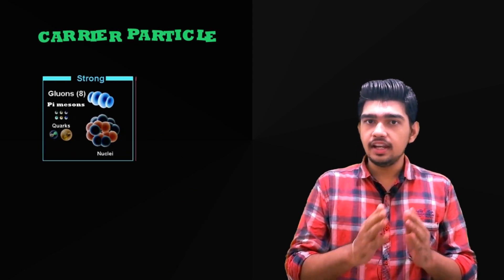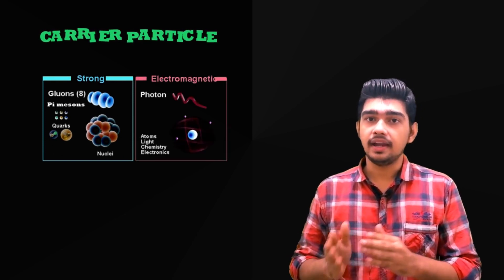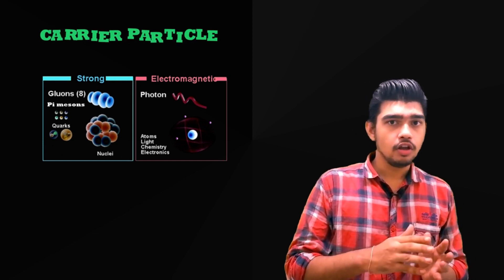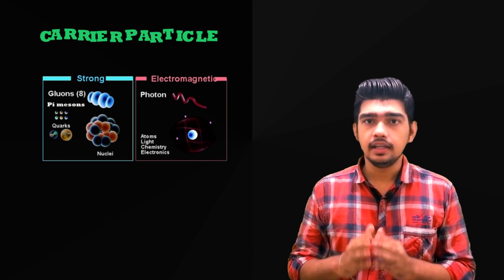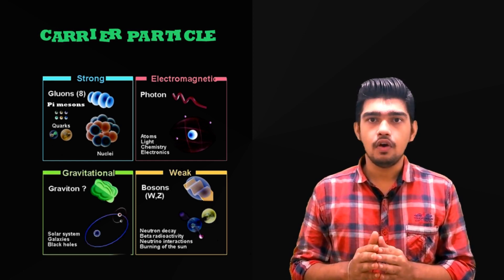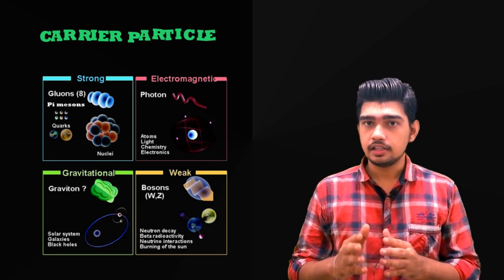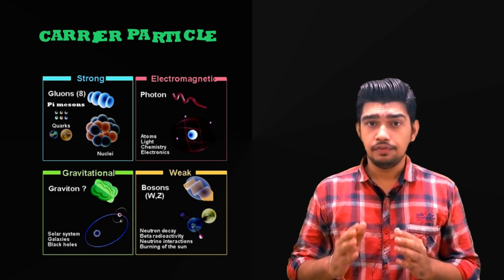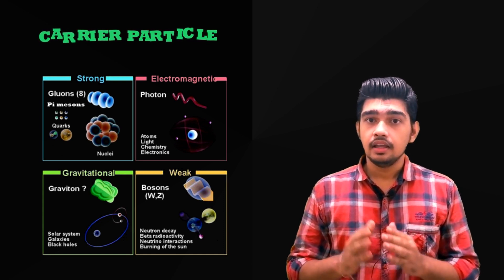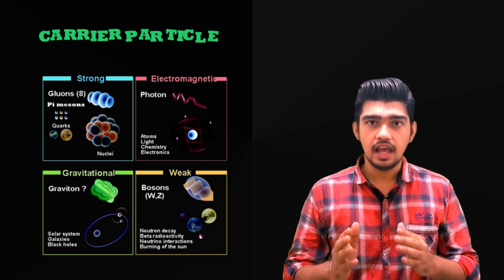Now let us see the carrier particle responsible for this interaction. The carrier particle responsible for nuclear interaction is pi-meson. Next, the carrier particle responsible for electromagnetic interaction is photon. Photon is the carrier particle that is responsible for electromagnetic interaction. Next, intermediate boson for weak interaction and at last graviton for gravitational forces. Thus, we have found the carrier particles responsible for these interactions. If we find the relationship between these forces, then that equation will lead us to the theory of everything, the theory that we as humans are waiting for.